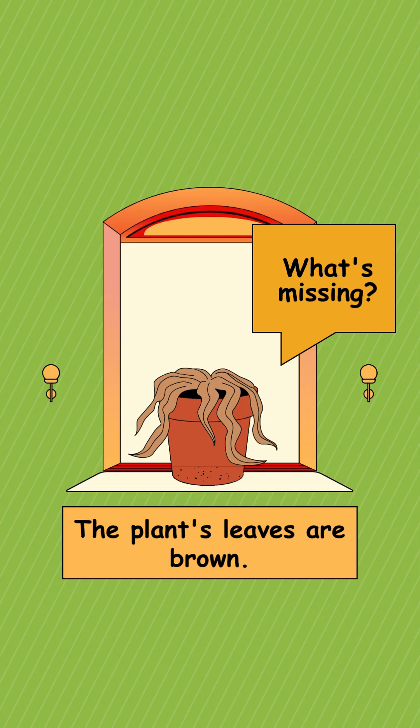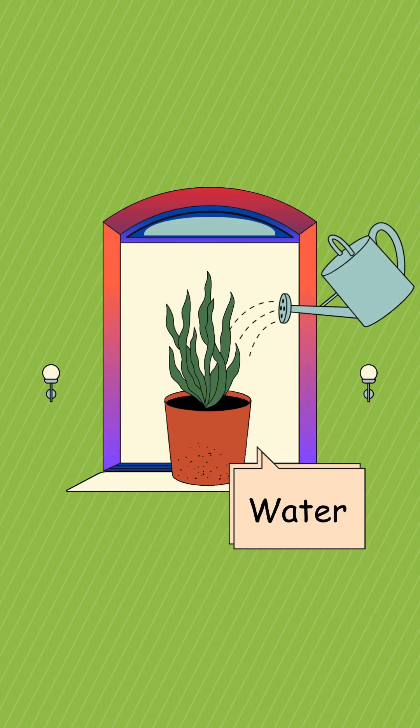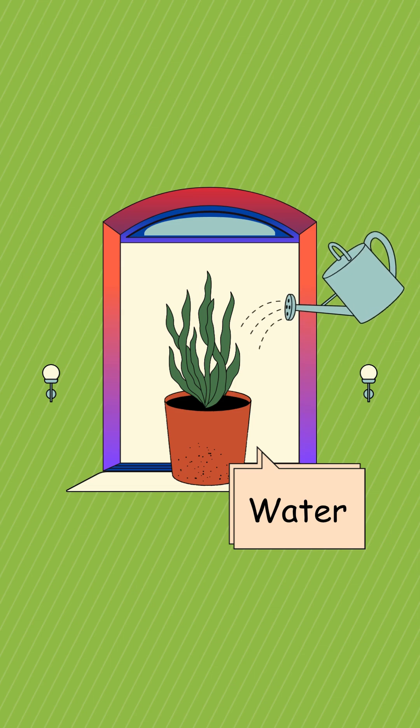The plant's leaves are brown. What's missing? It's water. Without water, the plant wilts and dries up.